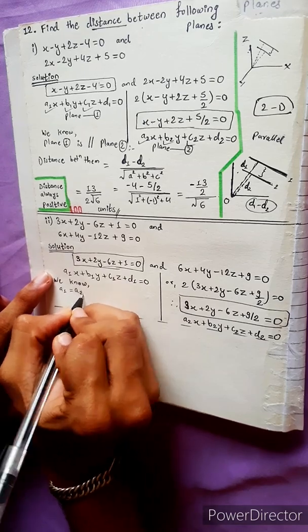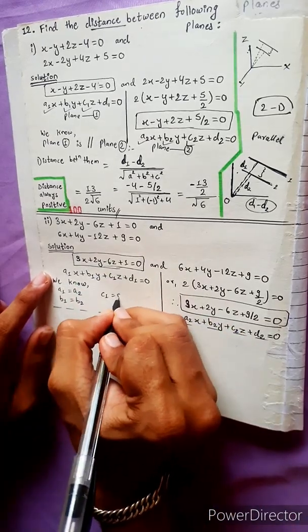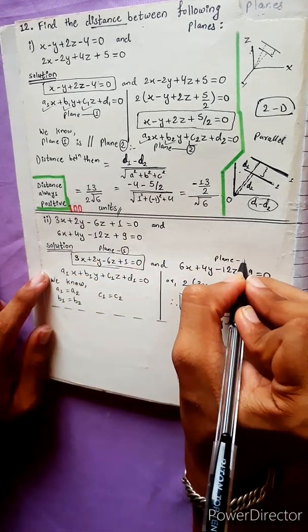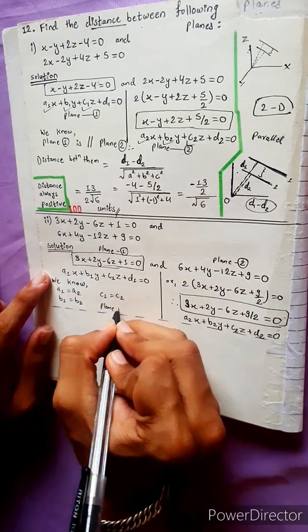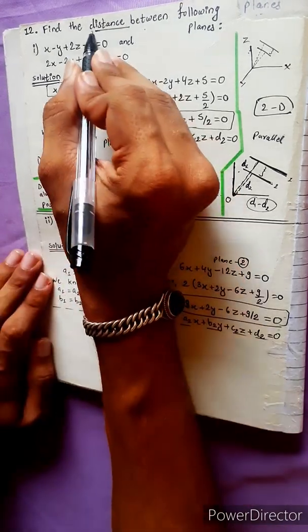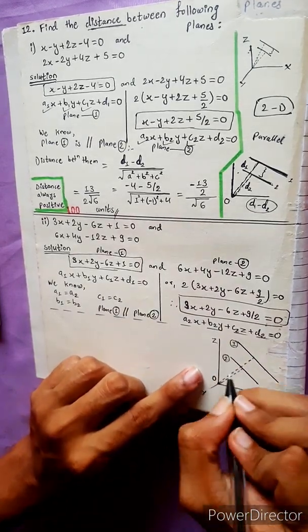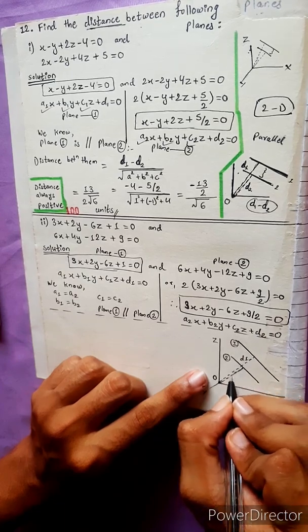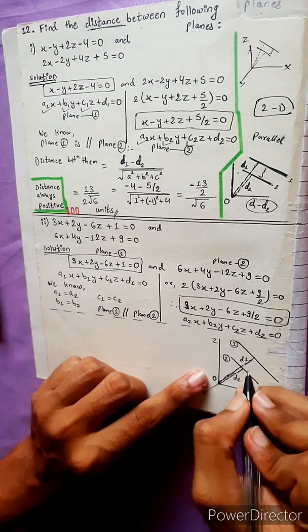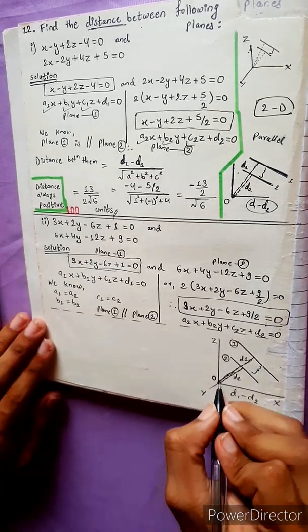Comparing coefficients: a1 = a2, b1 = b2, c1 = c2. Since the coefficients of x, y, and z are equal, Plane 1 is parallel to Plane 2.